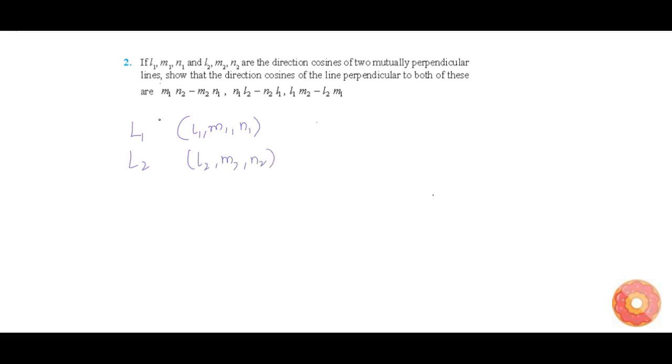Now, DCs are nothing but the unit vectors along the lines. They are the vectors that are parallel to the line L1, which is given by L1 I cap plus M1 J cap plus N1 K cap. The vector parallel to line L2 is L2 I cap plus M2 J cap plus N2 K cap.